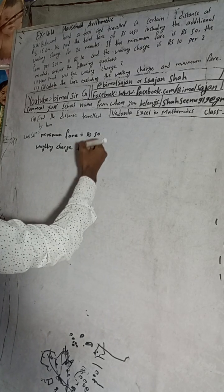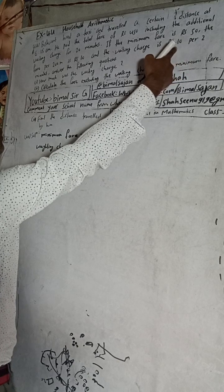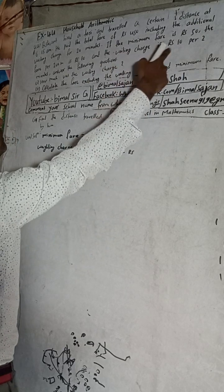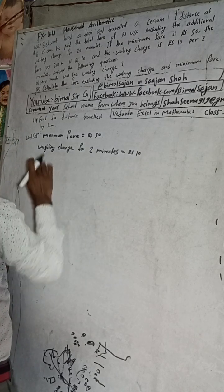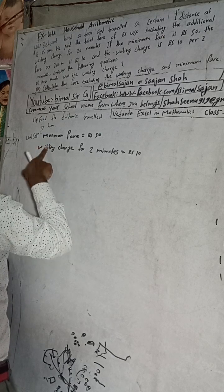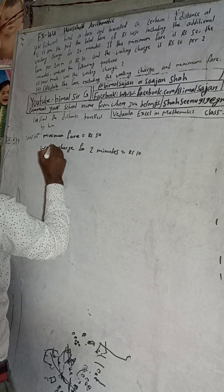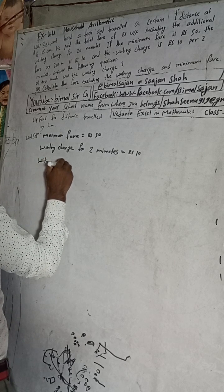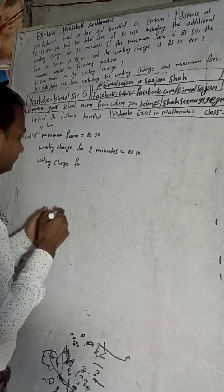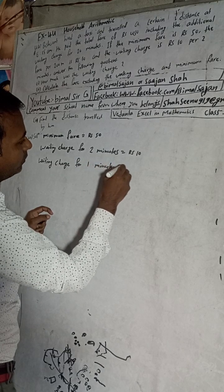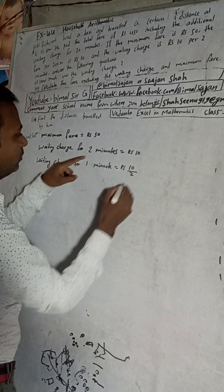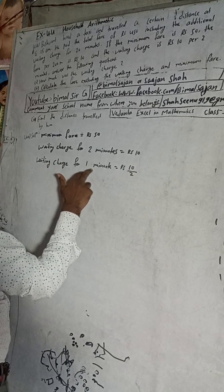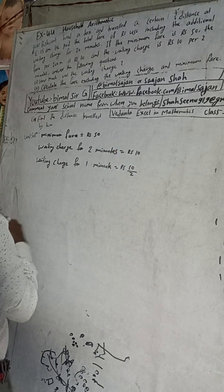Waiting charge for 2 minutes is equal to Rs 10. So the waiting charge for 1 minute is equal to Rs 10 divided by 2, because the waiting charge for 2 minutes is 10 rupees. So for 1 minute — less time — the charge will be less, so we divide. Therefore, the waiting charge for 1 minute is Rs 5.